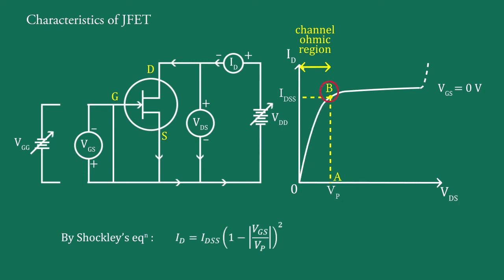At this stage, i.e., at point B, a little increase in current ID is observed with increasing VDS until point C, i.e., at avalanche point. The FET is said to be in pinch-off region corresponding to the curve BC.